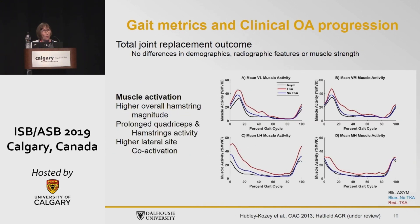Looking at the muscles in this dataset: we didn't have differences in muscle strength, but what we do have is higher overall hamstring activity in the group that went on to total joint arthroplasty, as well as prolonged activation — their pattern was actually different. In the quadriceps, we had more prolonged activation and higher mid-stance activation in that particular group, which coincides with what's going on with respect to the moments.